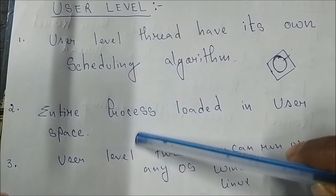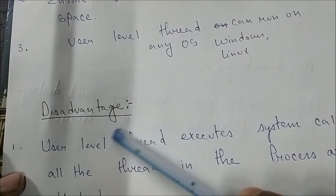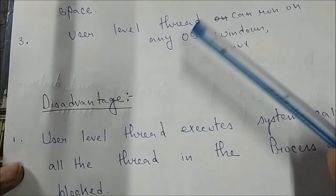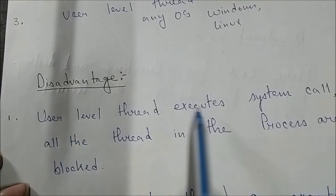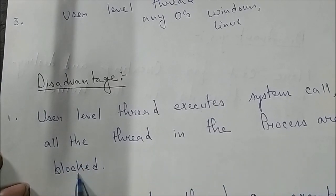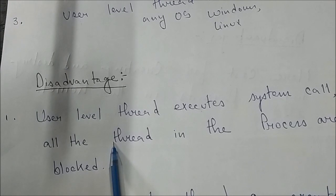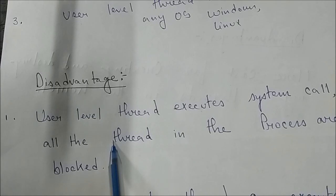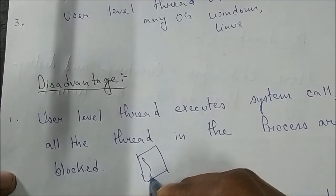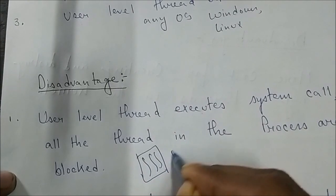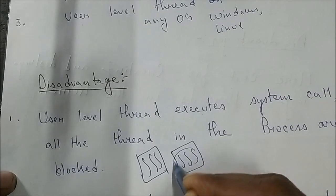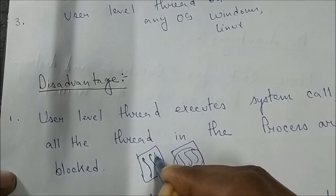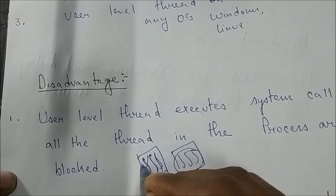Now we will see the disadvantages of user level thread. When a user level thread executes a system call, all the threads in the process are blocked. When a system call is given, it blocks all the threads. Within a process, if one thread is blocked, then all threads in the process will be blocked. This is a disadvantage of user level thread.